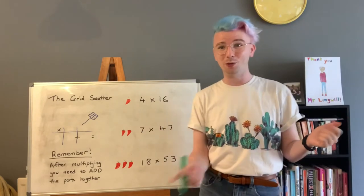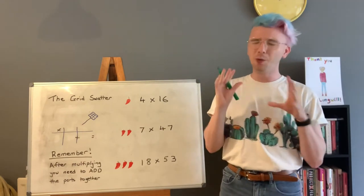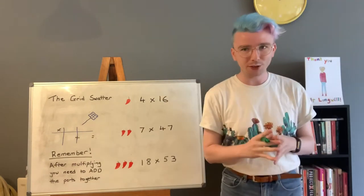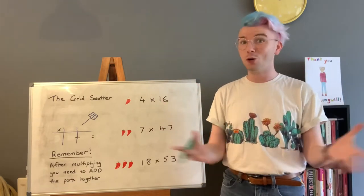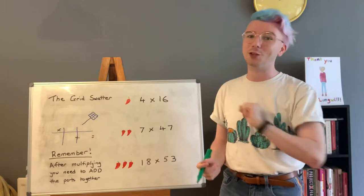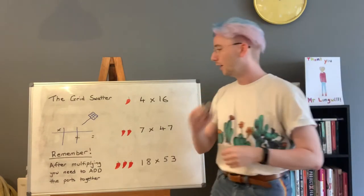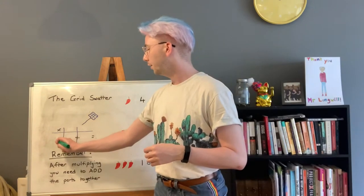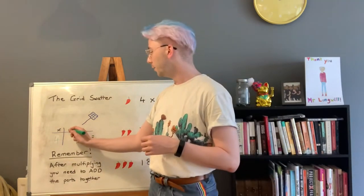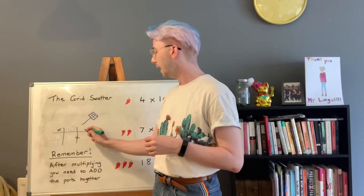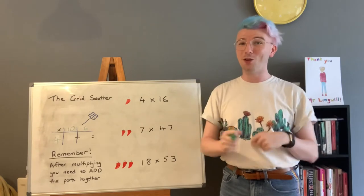Let's start with our mild problem. So we have the sum 4 times 16 and I wanted you to employ the grid swatter method to break that up and answer the question either on paper or more ideally in your head. How firstly do we split up that sum? I've got my example grid here. So I put the 4 here and I split the number 16 into the number 10 and the number 6.